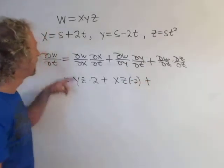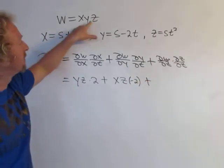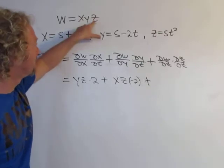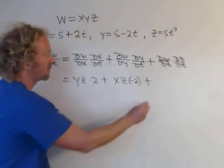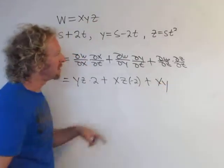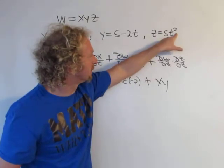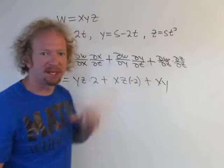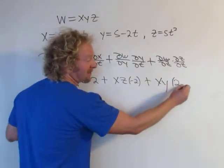Plus ∂w/∂z: the derivative of z is 1 and x, y are constants, so we get xy. Then ∂z/∂t is 2st.